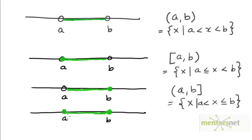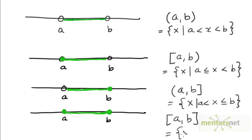And finally, the fourth interval is denoted as A, B with square brackets on both sides to indicate that both endpoints are included. This is the set of all numbers X such that X is greater than or equal to A and less than or equal to B.